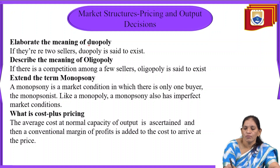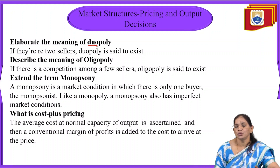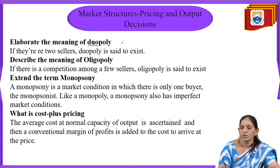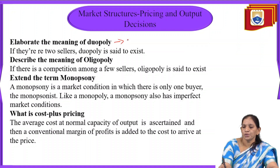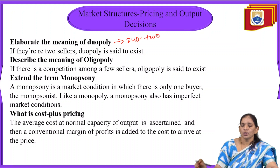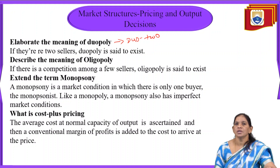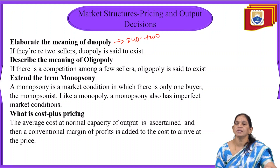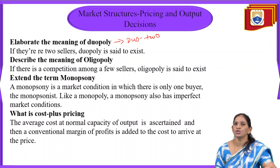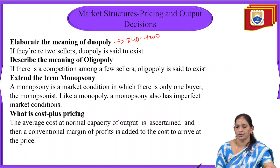Elaborate the meaning of duopoly. Here, duo means two. So if there is any market structure consisting of two sellers, we will call it duopoly. Duopoly means the selling of any sort of product or services by two persons. That type of market structure is called a duopoly market structure.